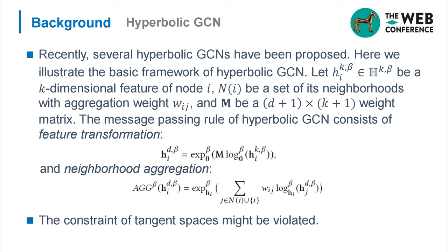Recently, several hyperbolic GCNs have been proposed. Here, we illustrate the basic framework of hyperbolic GCNs. The method consists of feature transformation and neighborhood aggregation. The constraint of tangent space might be violated. To address this problem, we need to redefine these operations.